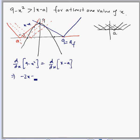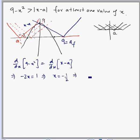Solving -2x = 1 gives x = -1/2. At x = -1/2, the y-coordinate on the parabola is 9 - (-1/2)² = 9 - 1/4 = 35/4.